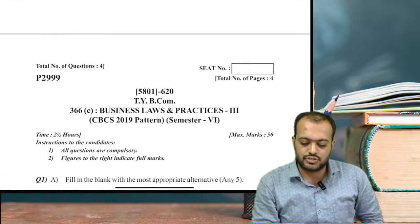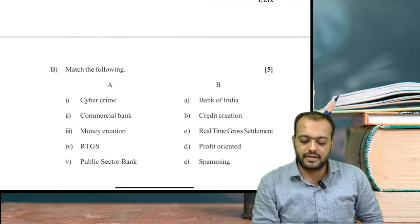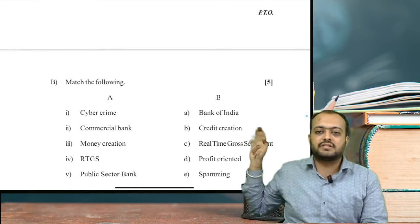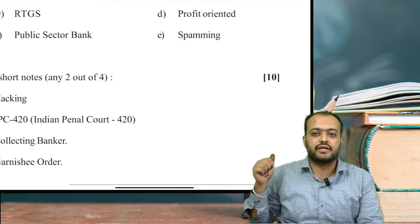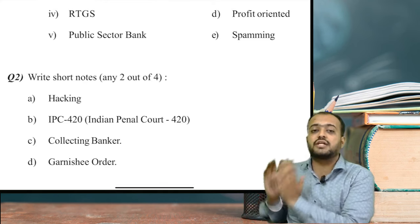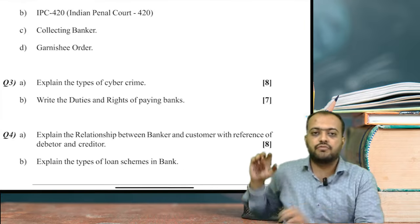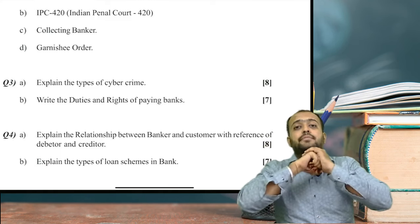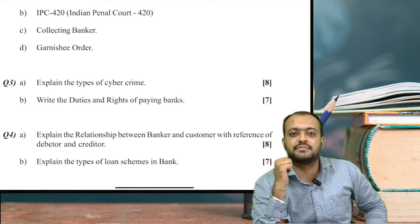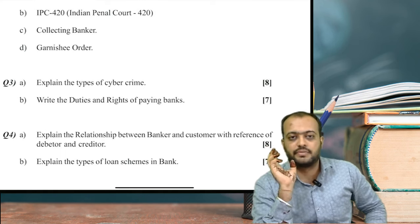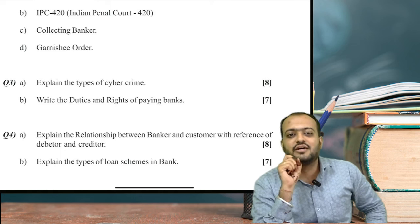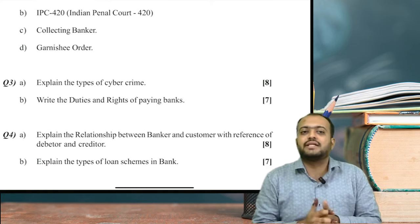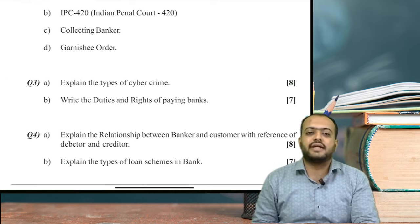Let me show you the question paper — for example, April 2020. Look at the paper pattern to understand it. It is a 50-mark paper of 2.5 hours. 5 marks for fill in the blanks, 5 marks for match the following — so 10 marks done. Next, short notes: write 2 out of 4, which is 10 marks. But if you look carefully, all 4 short note questions do not always belong to 4 different chapters. Then Question 3 and Question 4 — one has 8 marks, the other 7 marks — making 15 marks each. Everything is compulsory. You cannot skip anything. In this subject, you cannot afford to leave out any chapter because there is no option in the long answer section — 8 and 7 marks, everything is compulsory.